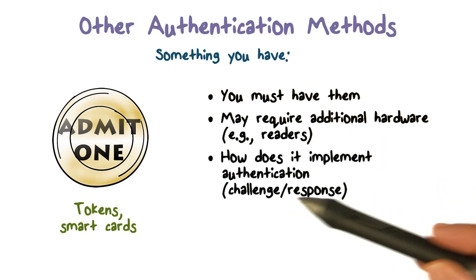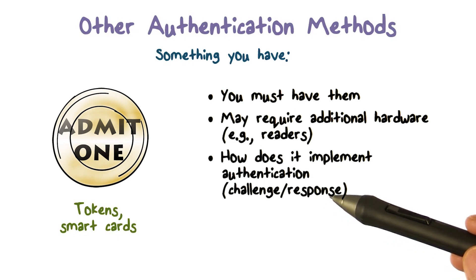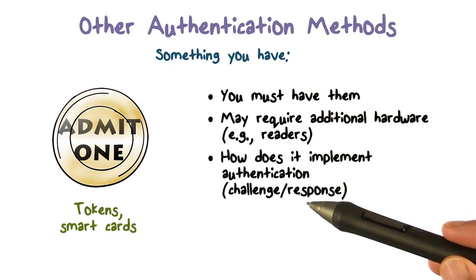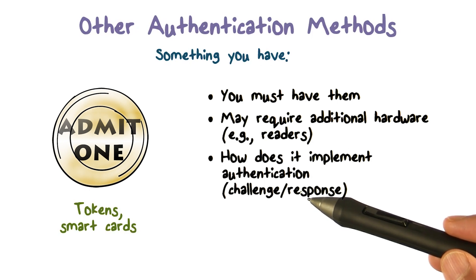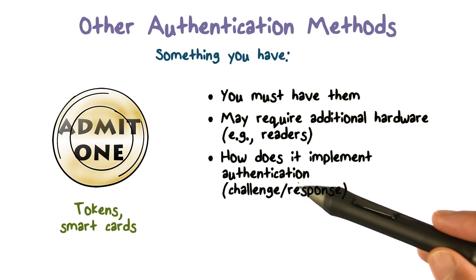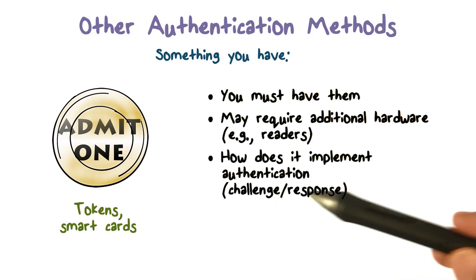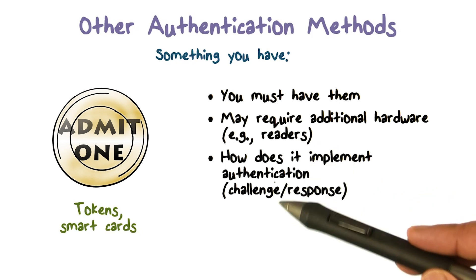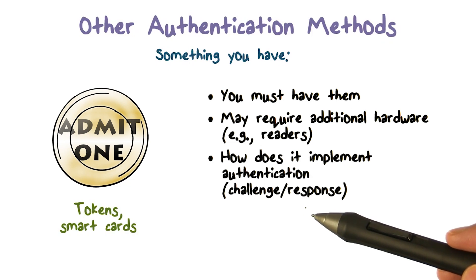How is authentication implemented with something you have? If you have a smart card that can talk to the system, there could be some sort of a challenge-response mechanism. The system can say: if you really belong to the user whose identity is being claimed, then that user's smart card has a certain secret. Use that secret to respond to the challenge — encrypt it or do something to the challenge. The response should demonstrate that the secret stored in the smart card was used to generate it.